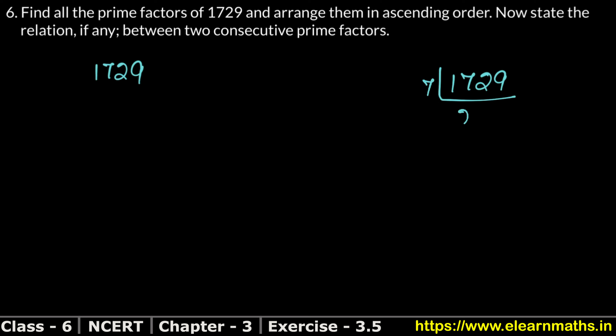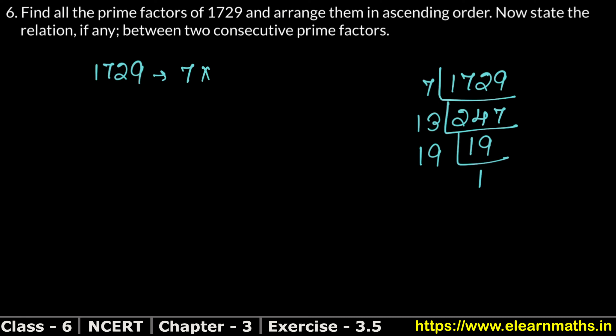Dividing 1729 by 7 gives 247. Now checking 247: it is not divisible by 7. Checking 13: 13 times 9 is 117, and 13 times 13 is 169. Dividing 247 by 13 gives 19. So the prime factors are 7 × 13 × 19.